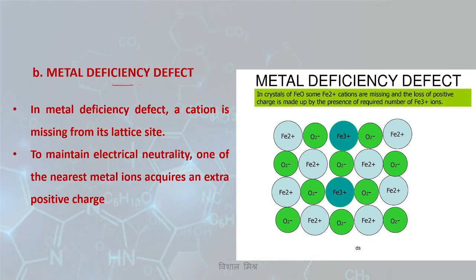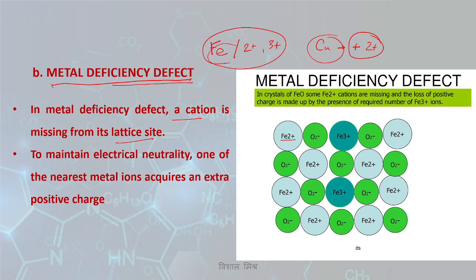Next is the metal deficiency defect. In this defect, a cation is missing from a lattice site. This defect is only seen in compounds that have variable oxidation states, such as iron (Fe²⁺ or Fe³⁺) or copper (Cu⁺ or Cu²⁺). For example, in a crystal where most ions are Fe²⁺, two of them may be Fe³⁺, meaning those sites have less electron density compared to Fe²⁺. This is known as the metal deficiency defect.